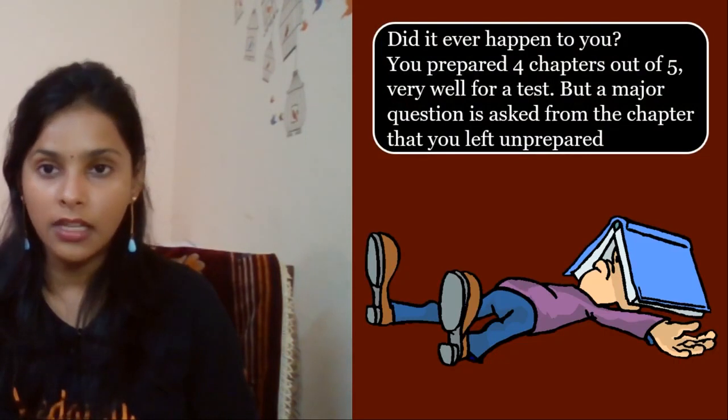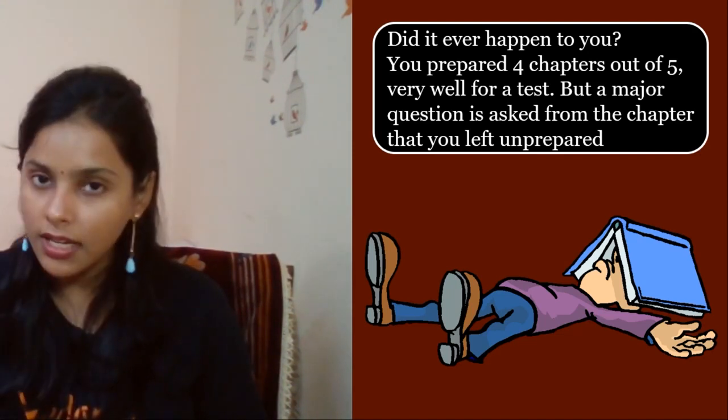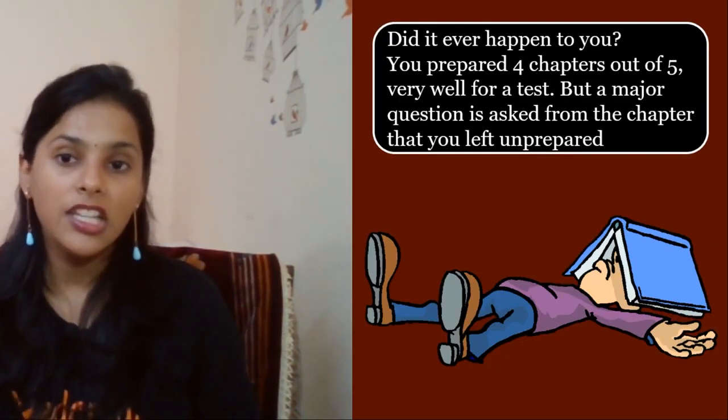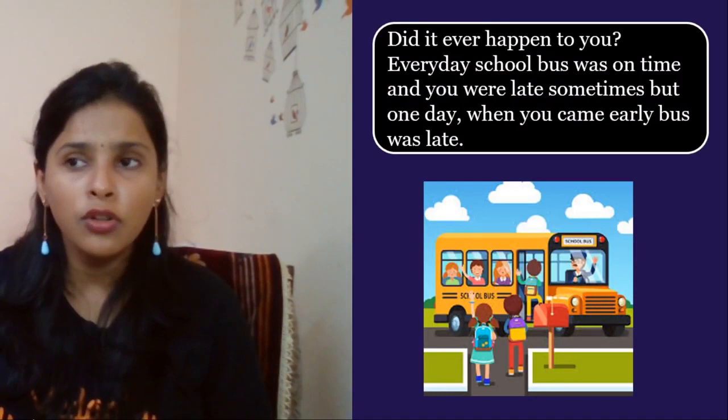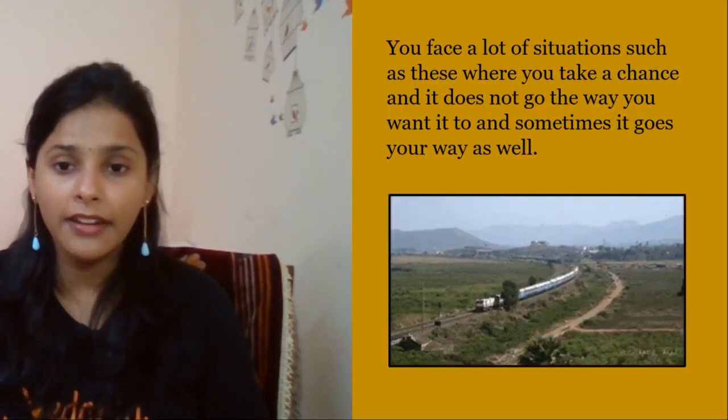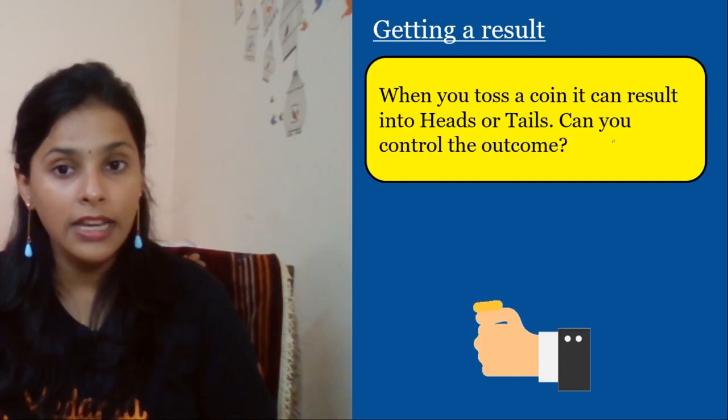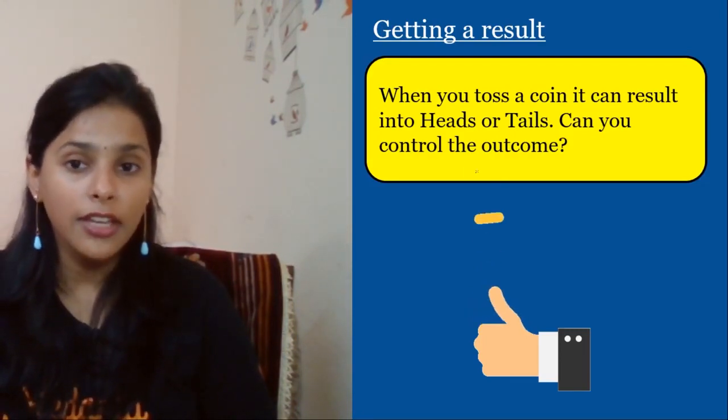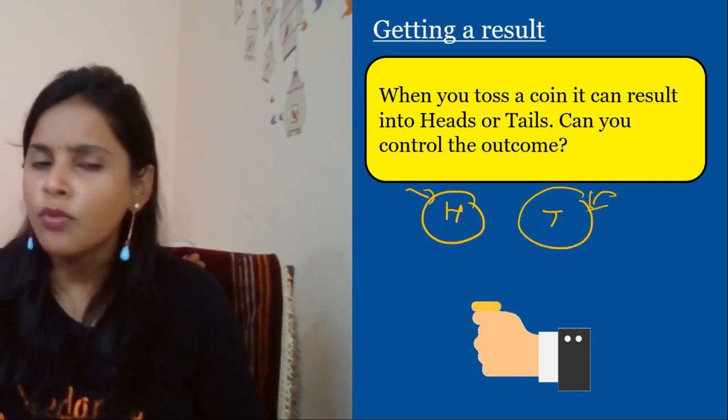Now this is the turn for probability. What are the chances? Getting a result means when you toss a coin, it can result into heads or tails. Can you control the outcome? Can you control if it's a head or a tail? You toss a coin, but you cannot control the result.